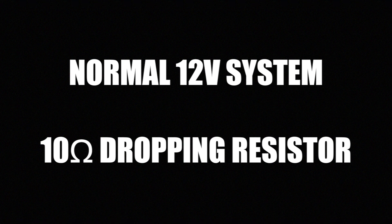Now let's increase the dropping resistance to 10 ohms and see what happens. The voltage drop across the resistor will obviously go up and across the fan will go down. They'll still add up to source voltage, but bear in mind that 10 ohms is not much and is invisible to most digital or electronic test lights.